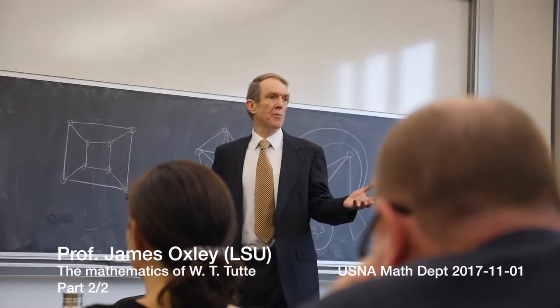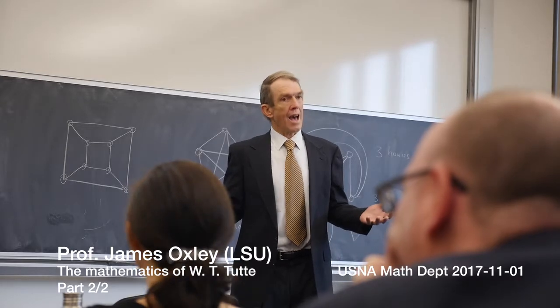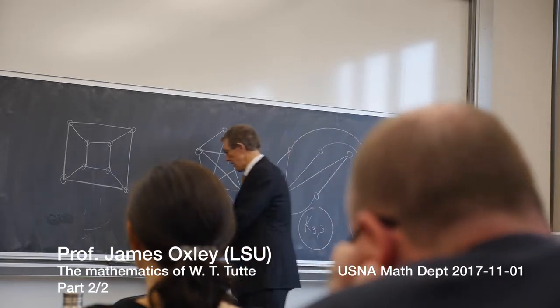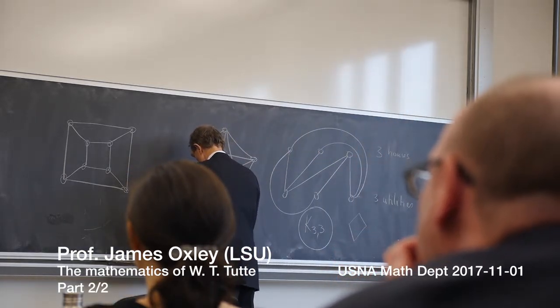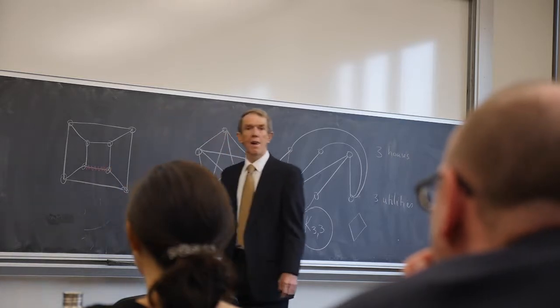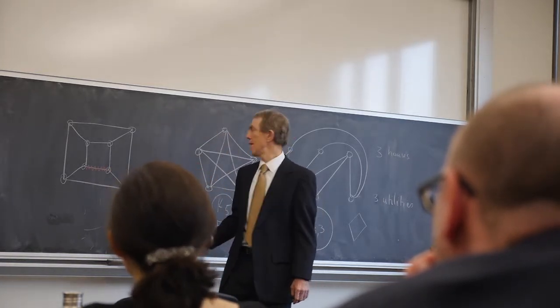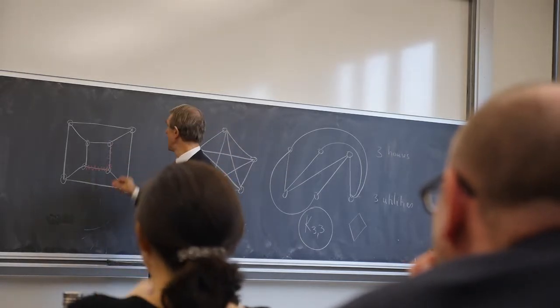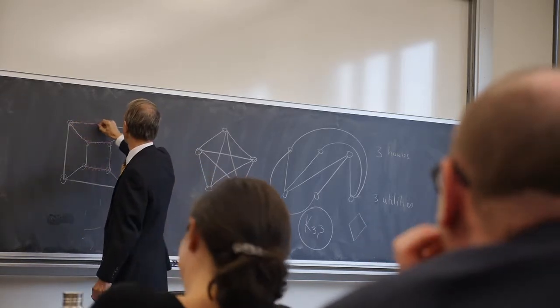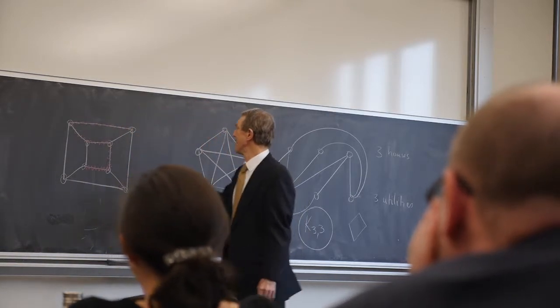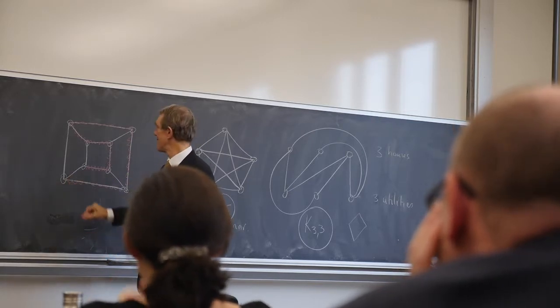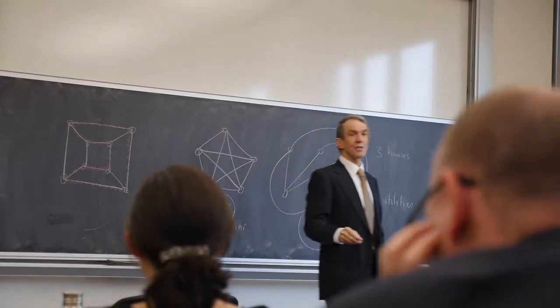The graph's got a Hamiltonian cycle. What's a Hamiltonian cycle? It's a way of wandering around the graph and hitting every vertex exactly once. Can you do that in this graph here? You don't have to hit every edge, you just have to hit every vertex.